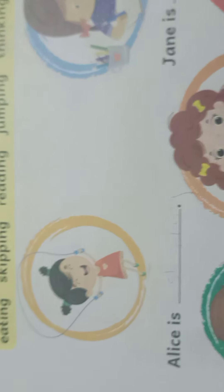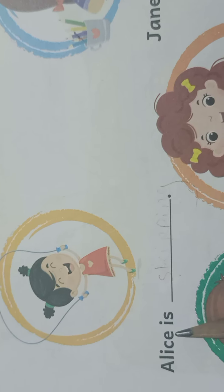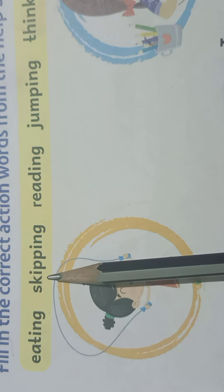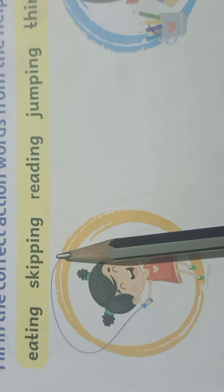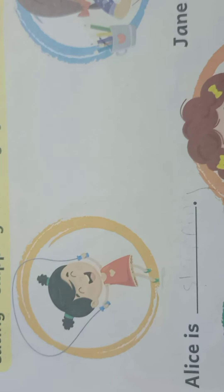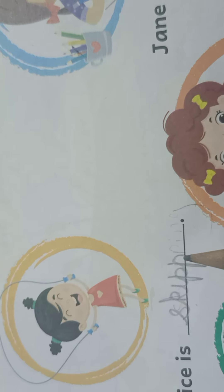Now you can see the picture here, children. This girl's name is Alice. A-L-I-C-E, Alice. What is she doing, children? Yes, she is skipping. She is skipping. S-K-I-P-P-I-N-G, skipping. So we will write the spelling: skipping.